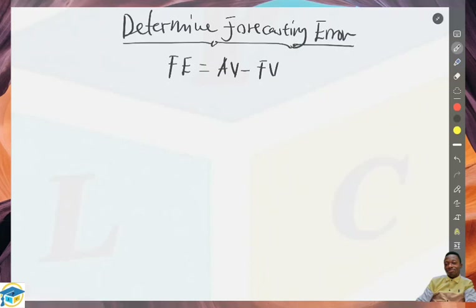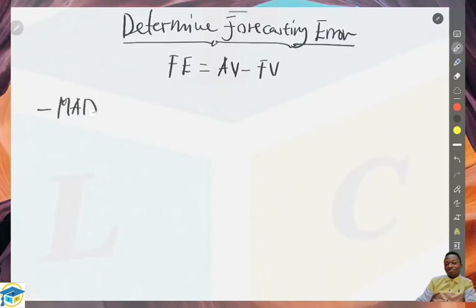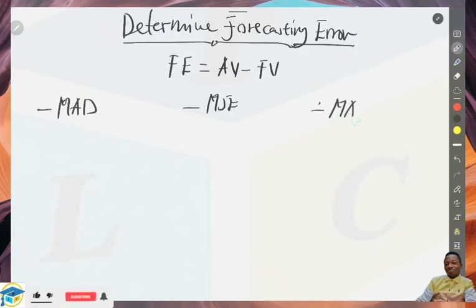In this particular video we'll look at three ways of computing the forecast error. These are: one, the Mean Absolute Deviation; two, the Mean Square Error; and three, the Mean Absolute Percentage Error. These are the three things we're going to look at in determining forecast error in this video.